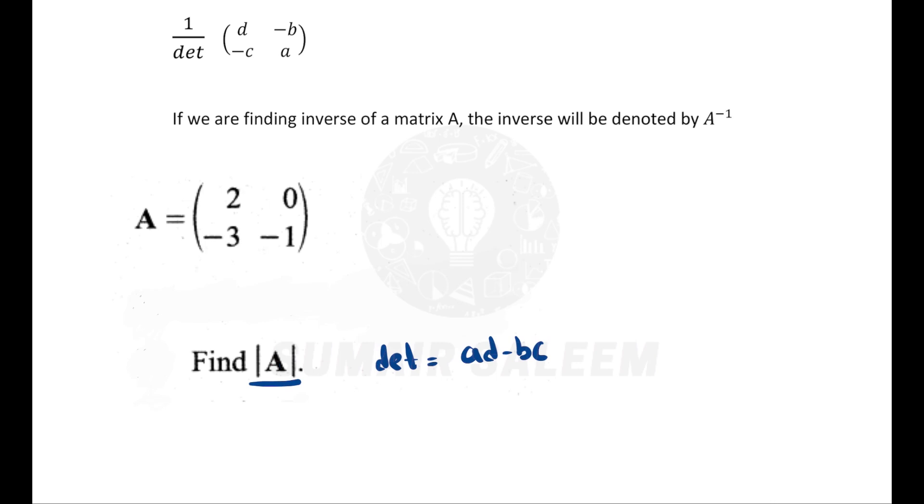Let's multiply. This is A, this is D. So 2 into minus 1 minus BC. This is B and this is C: 0 into minus 3. So my answer will be negative 2.